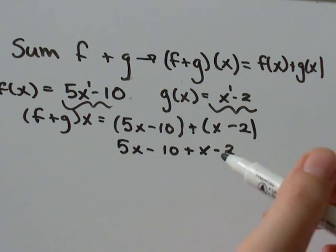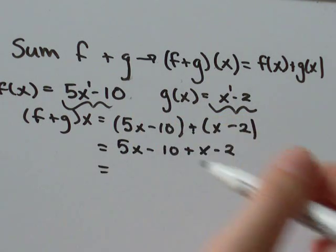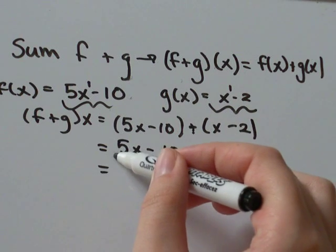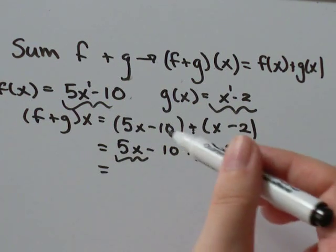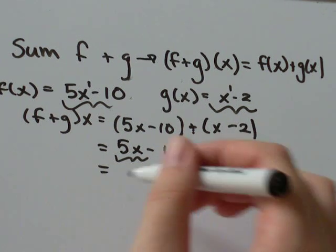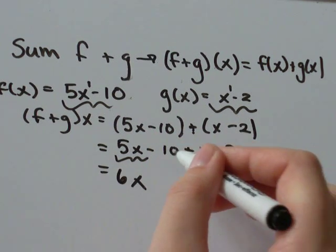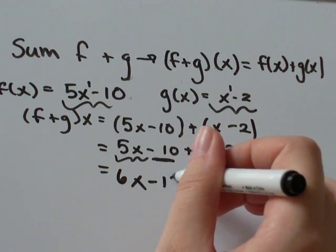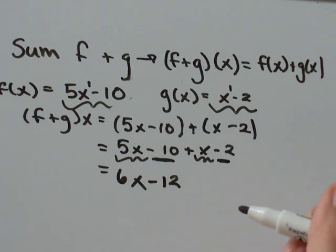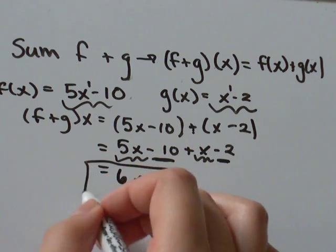We've got some like terms here that we can group together. I've got 5x plus another x, that would just be 6x. I've got minus 10 here, minus 2. Negative 10 minus 2 would just be negative 12. And that's our answer.